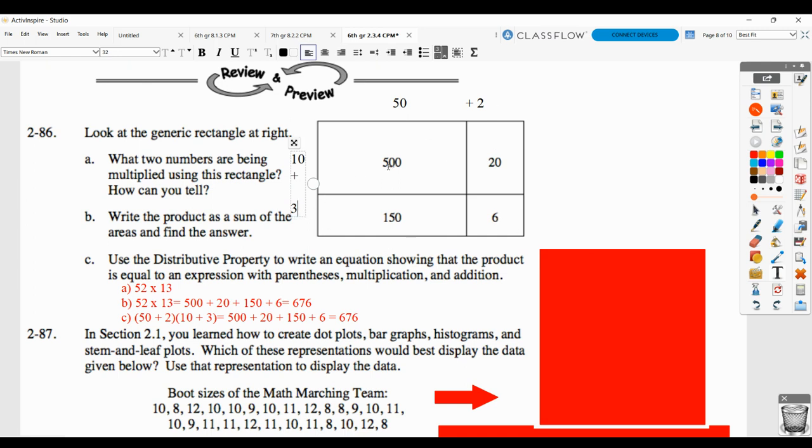So again, you may have to do a little trial and error to figure that out and to show that it works. So then what two numbers are being multiplied, 52 times 13. And then how can you tell? You should put some type of an explanation there. Maybe you could show the other possibilities that you tried. Maybe you could show that these do indeed give you the inside values in your generic rectangle.